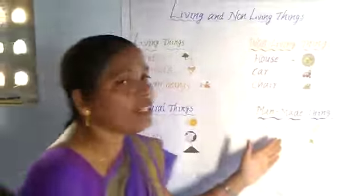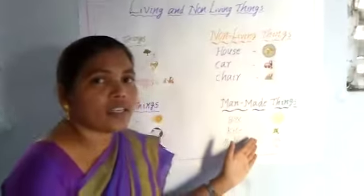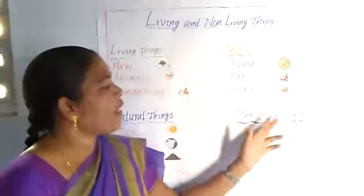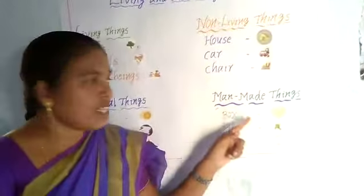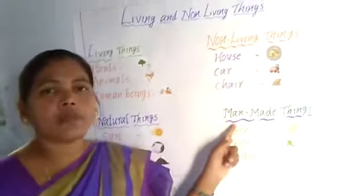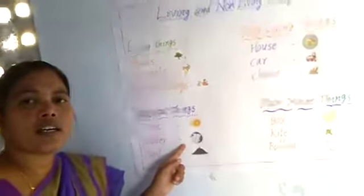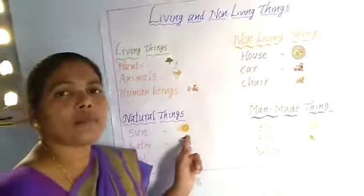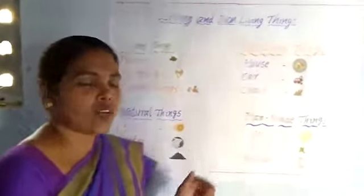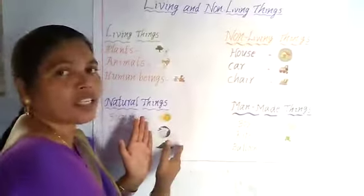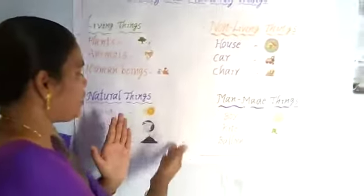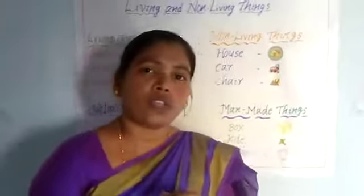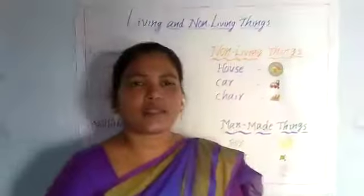Why do we call these man-made things? Because they are made by man. Why do we call them natural things? Because natural things are not made by man. Sun, water, soil, moon, and stone — these are called natural things.